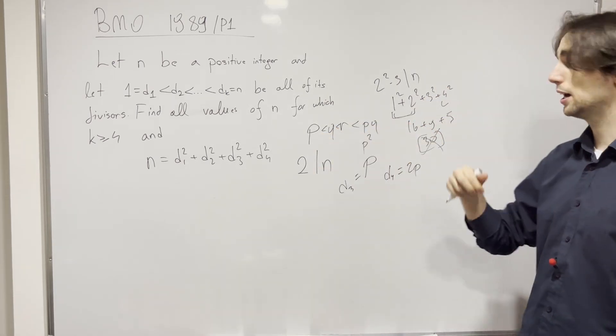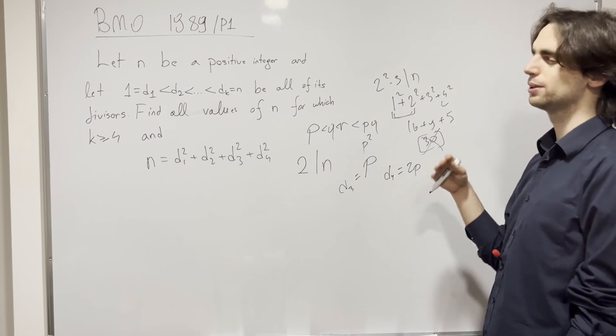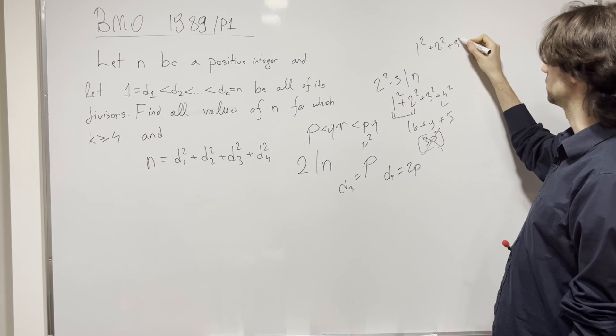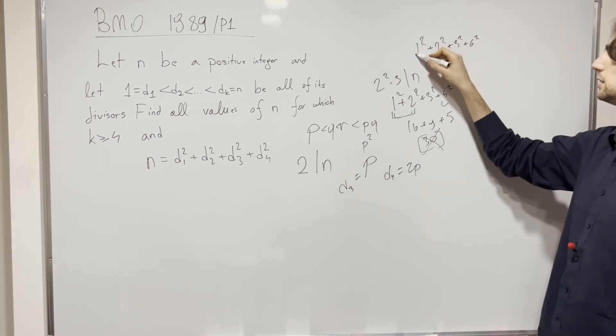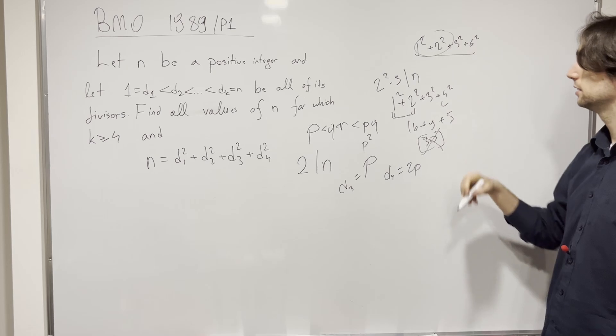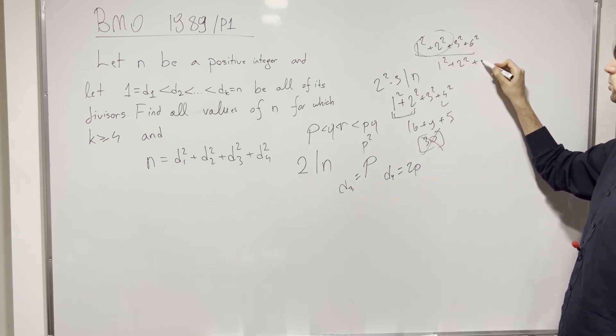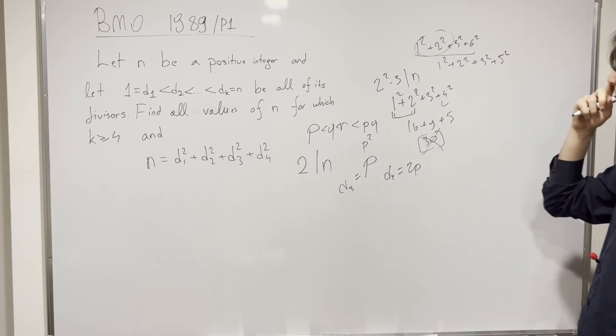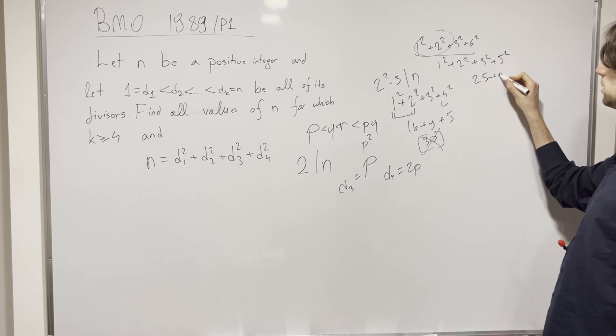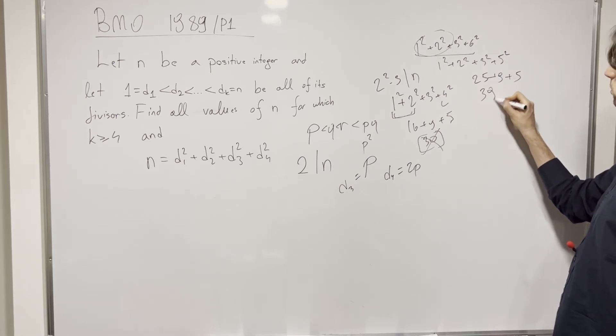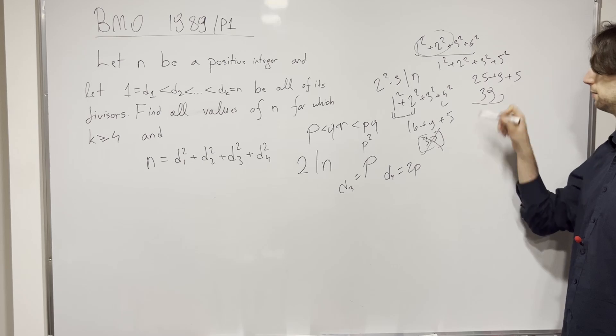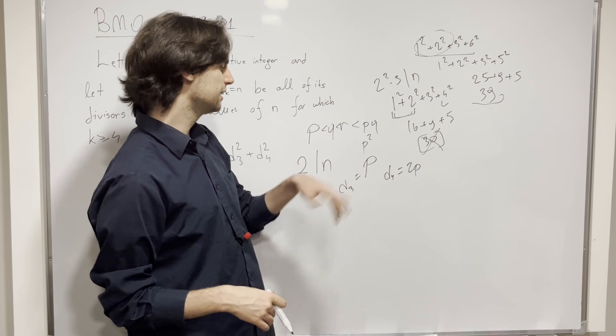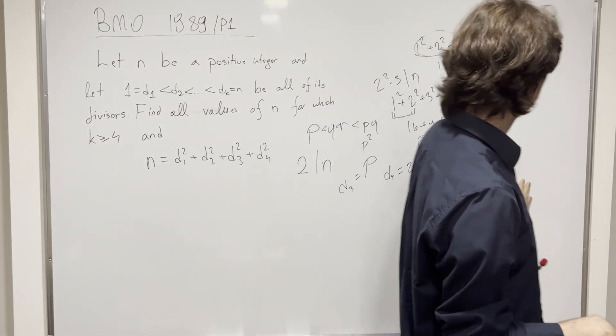So if 3 divides n, well, wait a second, if 3 divides n, we have a couple of possibilities. Like, we have either 1 squared plus 2 squared plus 3 squared plus 6 squared, and this number is not going to be divisible by 3, because this isn't. So we must have 1 squared plus 2 squared plus 3 squared plus, now, 5 squared, because 2 times 3 is the divisor of n, if 2 and 3 are, and this is 25 plus 9 plus 5, which is equal to 39, this is not divisible by 5, like, ever.